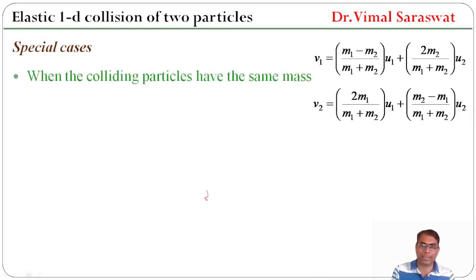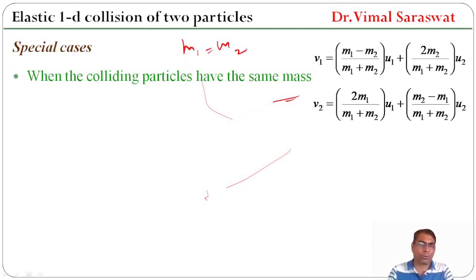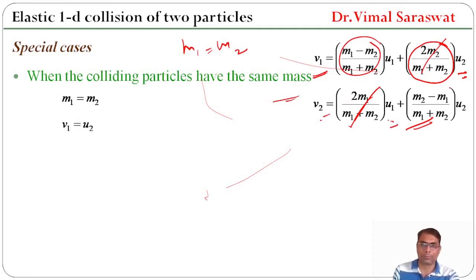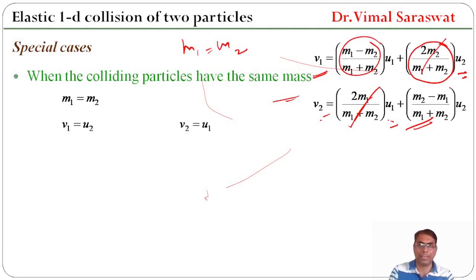Special case 1: when the colliding particles have the same mass, i.e., M1 = M2. If we put M1 = M2, the (M1 − M2) term becomes 0, and the 2M terms cancel, so V1 = U2 and V2 = U1. This means if two particles having the same mass collide, after collision their velocities are interchanged: the second particle moves with the velocity of the first and the first with the velocity of the second.